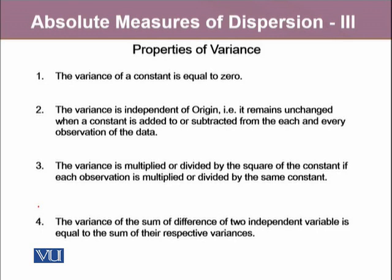The variance of a constant is equal to zero. If in our data all the values are constant, like 'a' for all the values, then the variance of this constant is going to be zero. Because all the values are getting on to one point, there is no other spread right there.